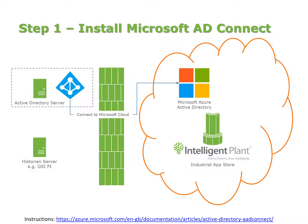In order to make use of the App Store, the first thing we have to do is install Microsoft Active Directory Connect. That gets installed close to the Active Directory server, and Active Directory Connect connects to the Microsoft cloud. It can be configured either to query your Active Directory server when a request is made, or to take a cache of your Active Directory into the cloud — that's up to you. Setup instructions are located here, so you can go there and get that set up.